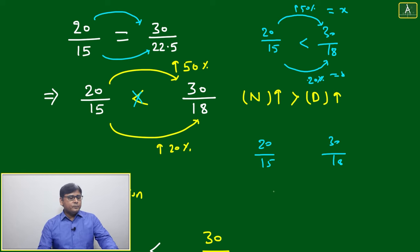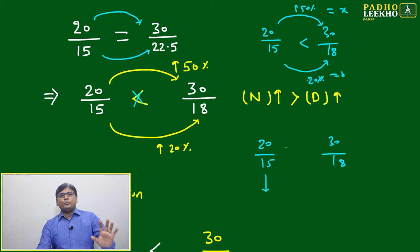You have to compare - which one will be more, which one will be less? 20 by 15 and 30 by 18. Pick any one numerator between 20 and 30 and convert into one another numerator.